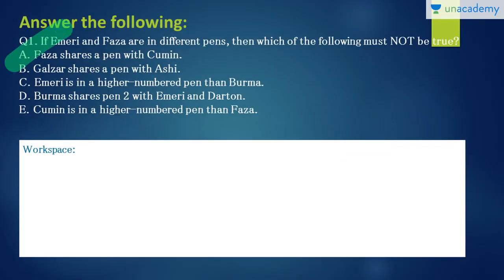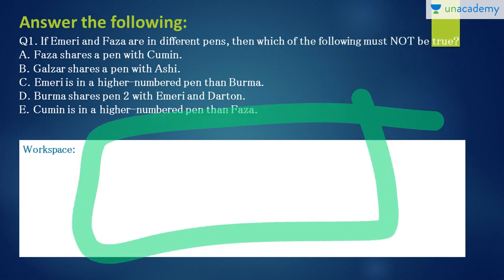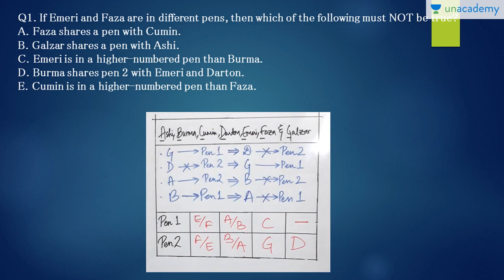Number 1, if Emeri and Faza are in different pens, then which of the following must not be true? Okay, so first of all see I have not solved the question on the same page so that you can stop the video here and try it by your own before seeing the solution. And let us proceed with the solution now. If Emeri and Faza are in different pens, then which of the following must not be true? Okay, so first I will use this condition and fill this table.